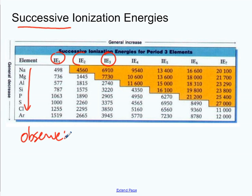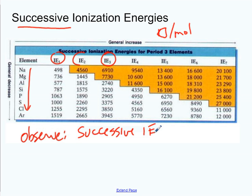For sodium, it costs about 500 kilojoules per mole — that's the unit, kilojoules of energy per mole of the element. The price jumps up to 4,500 kilojoules to take away the second electron, then about 6,900, 9,500, 13,000, 16,000, 20,000. For magnesium: 700-something, 1,400-something, 7,700-something, 10,000. The successive ionization energies increase.